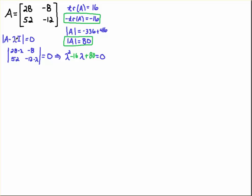A minus lambda I, and we take its determinant. We set it equal to zero. You could actually expand this out, take this determinant and you'll get lambda squared minus 16 lambda plus 80. As you see here, if I take the trace of A, that's 28 minus 12, I get 16. Minus the trace of A is minus 16. So I put that there. If I take the determinant of A, I get 28 times minus 12 is minus 336, minus a minus 8 times 52 is 8 times 52, which is 416. Minus 336 plus 416 is positive 80. So I put that positive 80 there.